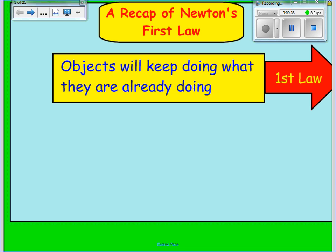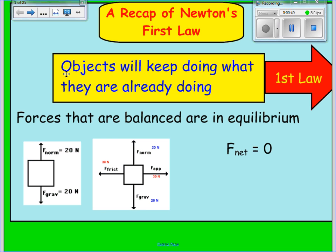Objects that are in equilibrium are such where the forces are balanced out — in other words, the net force acting on an object is 0. The box on the left has a force of gravity pulling down and a force normal pulling up. Since both are equal to 20, the net force is 0 because the y-forces cancel each other out and there are no x-forces.